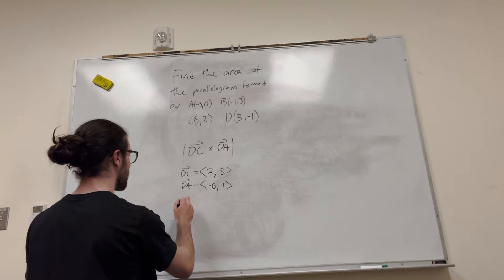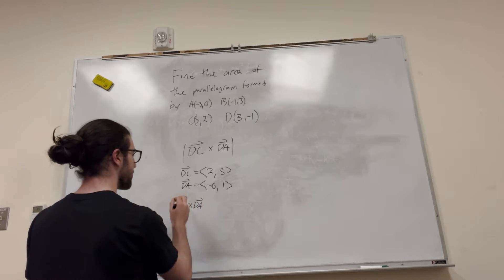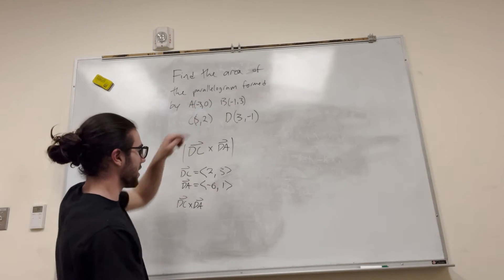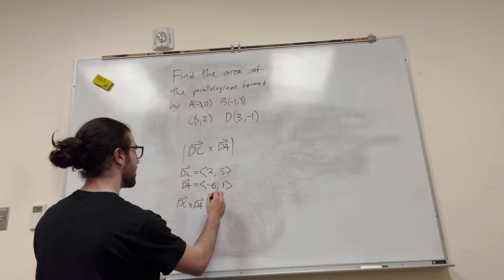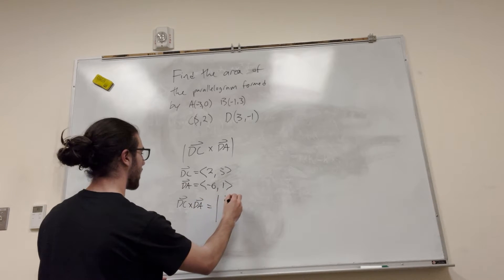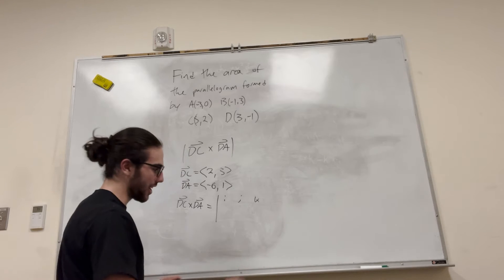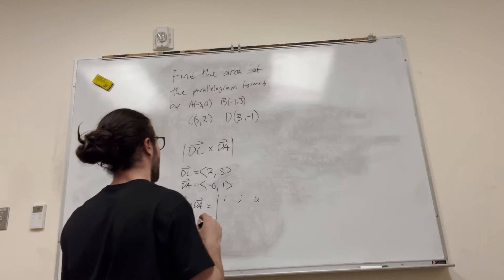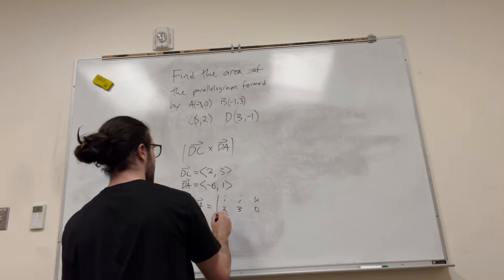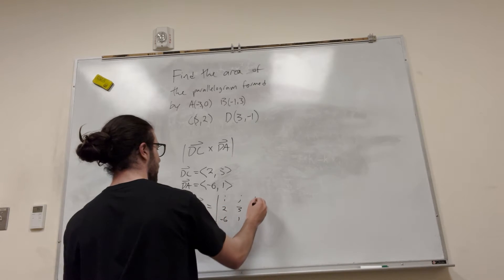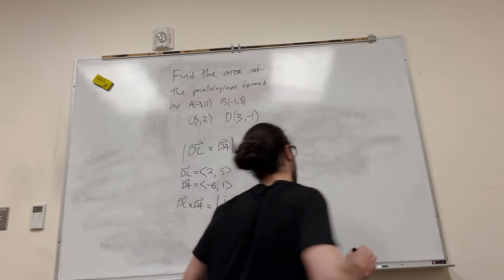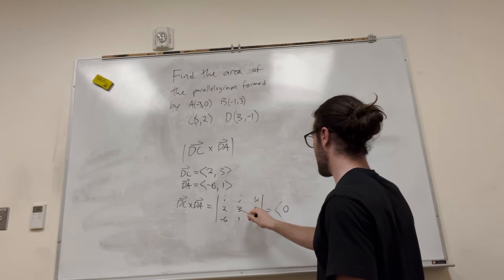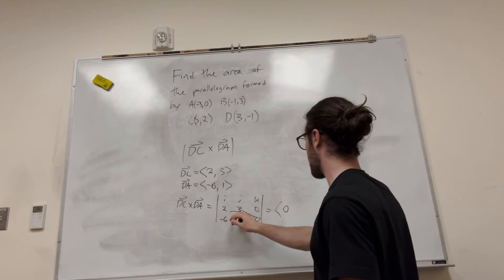Let's cross them. Our matrix is going to look like i, j, k. You don't even need to do this whole thing — I'm just doing it because I think it's fun. Our values are (2, 3, 0) and (-6, 1, 0). The i and j components are going to give you 0, because the z-values are all 0.